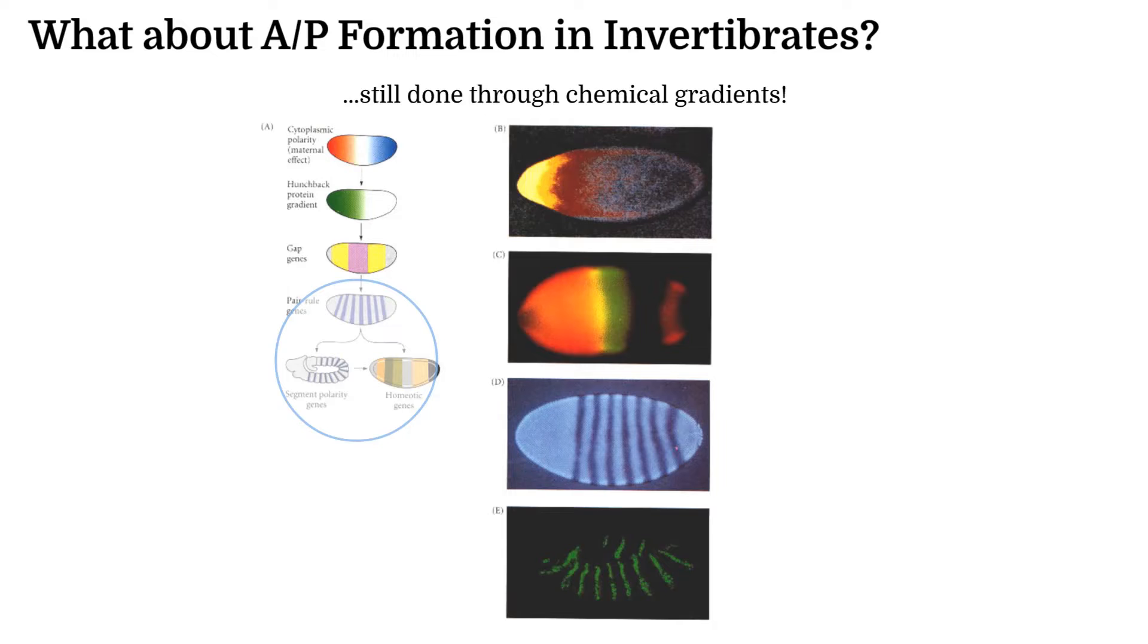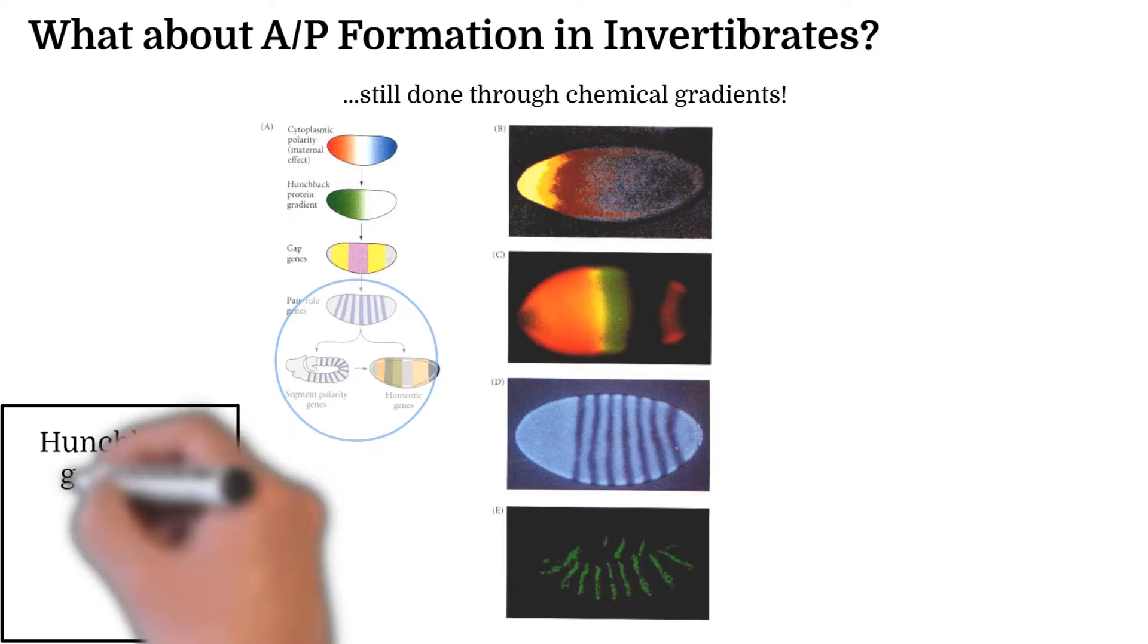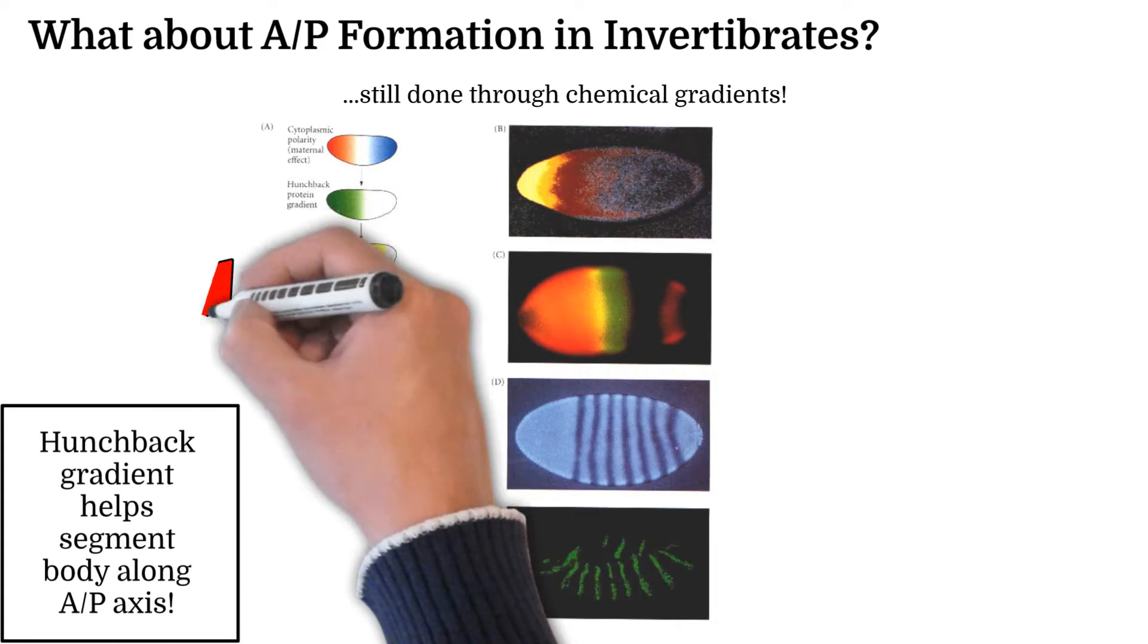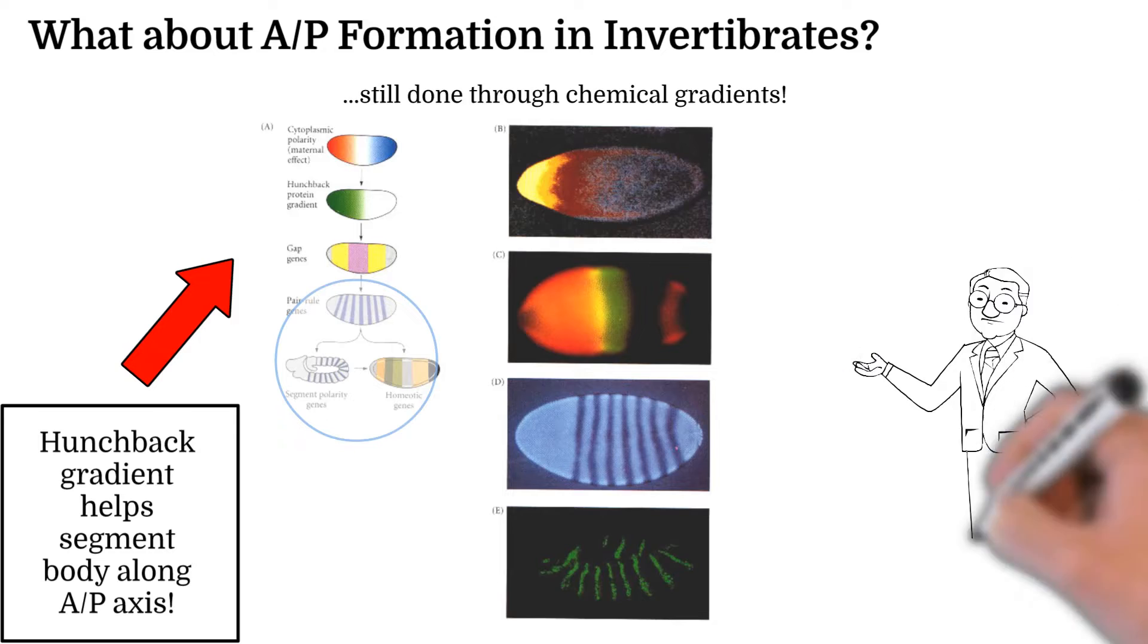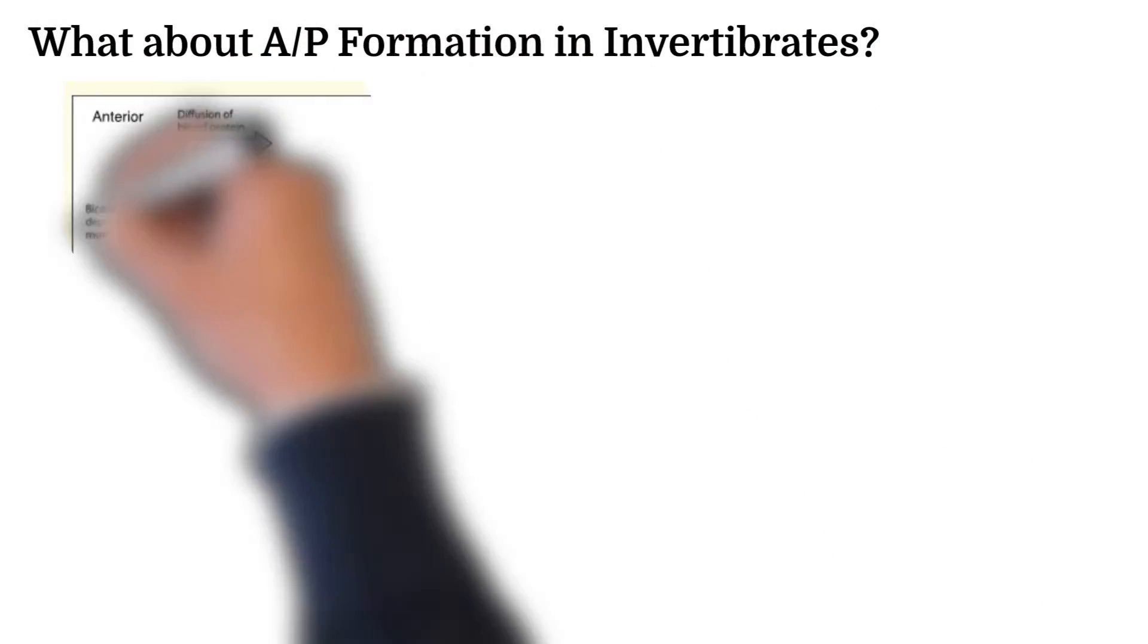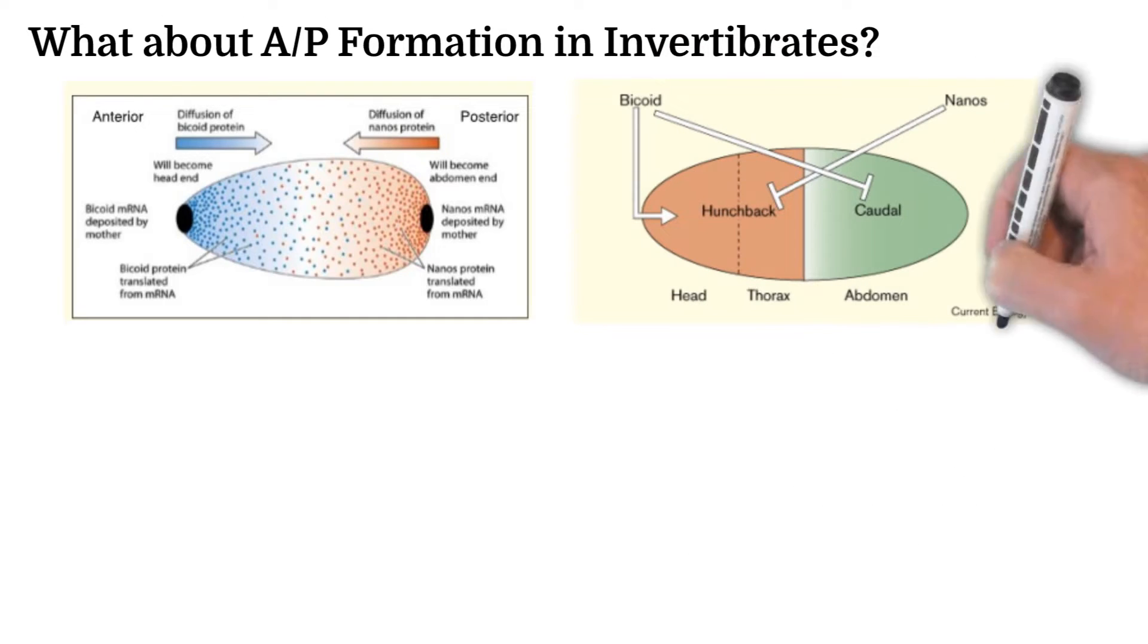This segmentation and axis formation is largely due to the role of the protein called hunchback, which has high concentrations on what will be the anterior side of the embryo. Just like we saw in vertebrates, however, hunchback's gradient is not the only contributor to this occurrence. There are two regulator transcription factors, bicoid and nanos, that help both induce and inhibit the concentration of hunchback and its posterior competition, caudal.